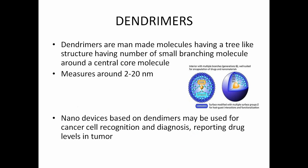Dendrimers are made of molecules having a tree-like structure with a number of small branching molecules around a central core molecule. They measure about 2 to 20 nanometers. Nanodevices based on dendrimers may be used to treat cancer cells and also for diagnosis, reporting the level of tumors.